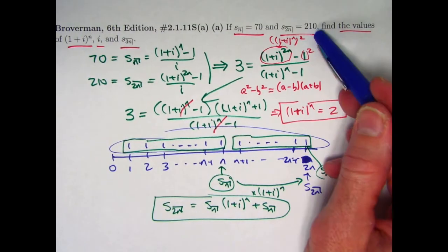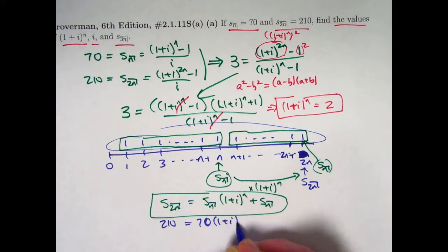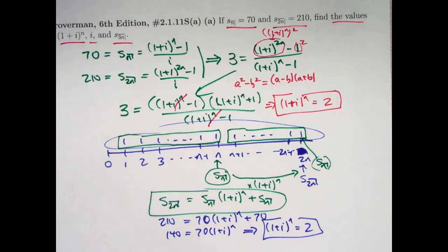This does allow us to solve for (1+i)^n because now I can go back and use these numbers again. I can say 210 equals 70(1+i)^n + 70. I can subtract 70 from both sides, divide both sides by 70, and get the same answer as before: (1+i)^n equals 2. So two methods for solving for (1+i)^n, both involving fundamental algebraic tricks that most people typically don't remember from high school.